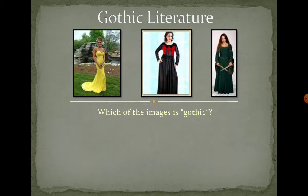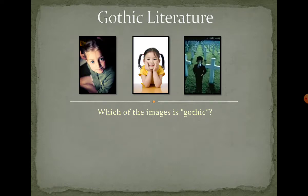First of all, I want you to have a look at these photos. Which one makes you feel gloomy and stressed — the one in the yellow dress holding a bunch of flowers, the one in black and red, or the one holding swords? Try to guess which one is related to gothic literature. Which of these photos refers to something gloomy and stressful — the two smiling girls or the boy in that photo?